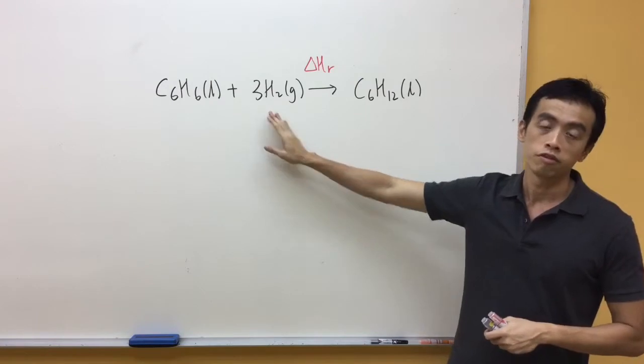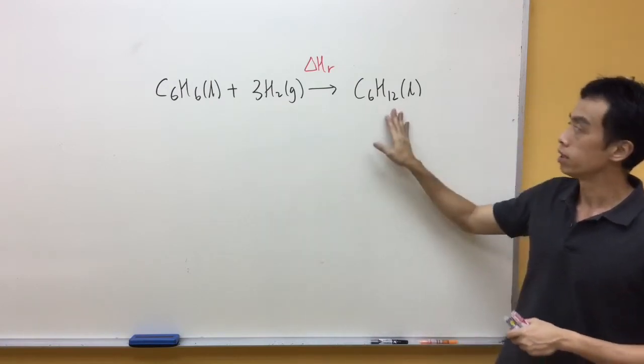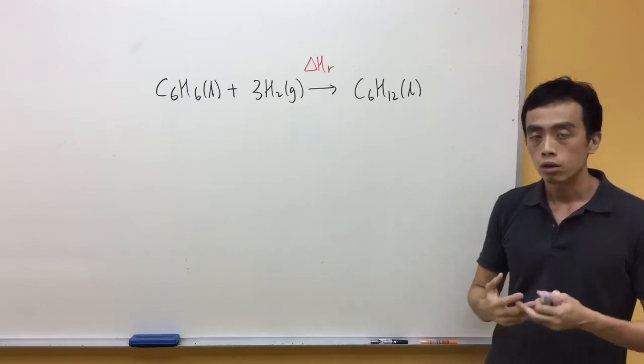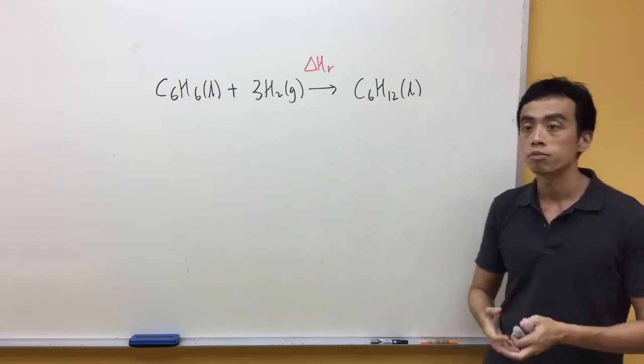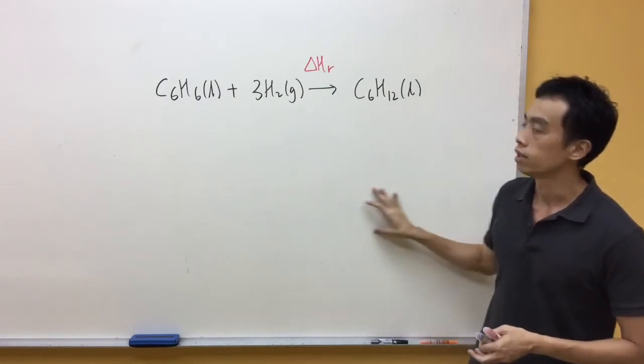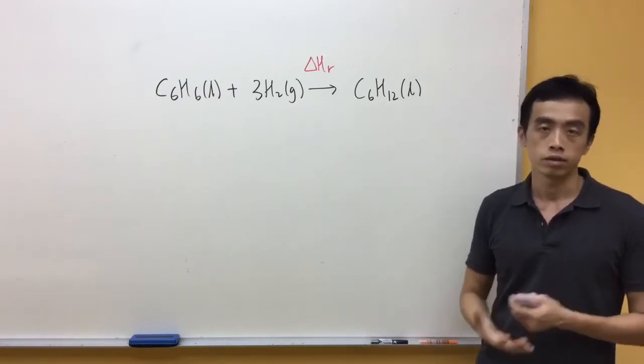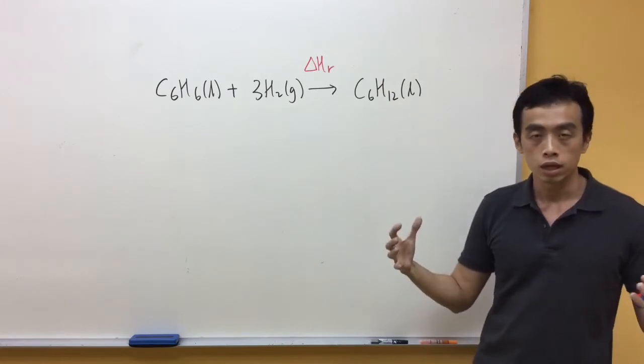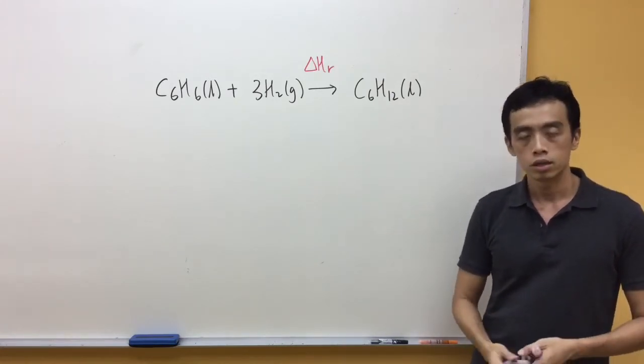If I burn hydrogen, it will give me water. If I burn C6H12, which is another organic compound, I will also get carbon dioxide and water. So what this means is that at this bottom section here, we can actually just put down carbon dioxide and water because all these three compounds just undergo combustion to give me CO2 and water.